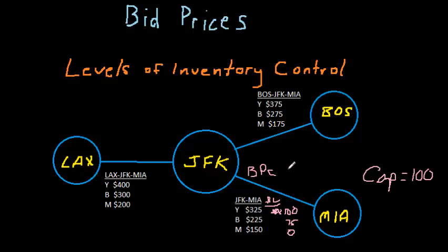Let's say the bid price turned out to be $175. The bid price is a threshold, the minimum acceptable fare. A bid price equals the minimum acceptable fare for the next seat in inventory. To take the next seat out of capacity, the airline needs at least $175.